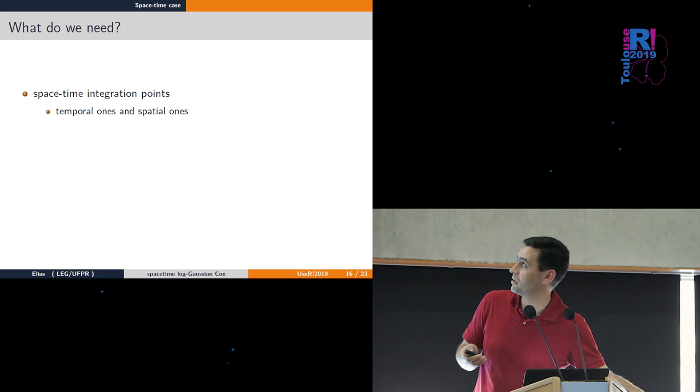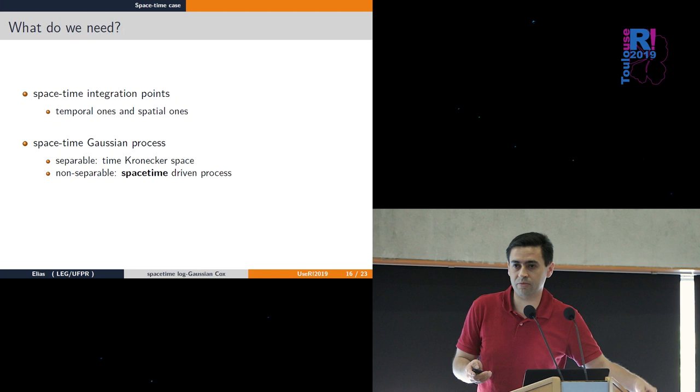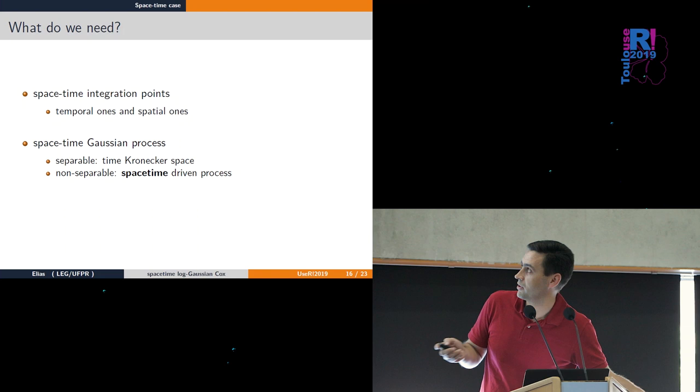We need integration points over space to do the integration as in the one-dimensional example. When we have spatial-temporal processes, we need a Gaussian model.